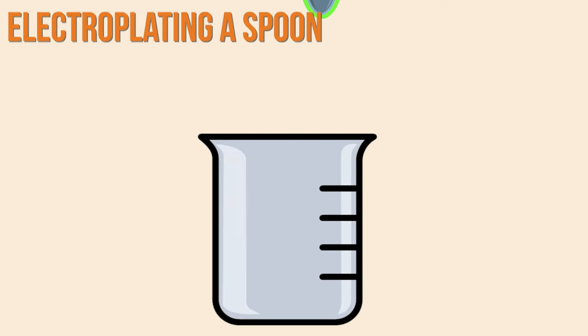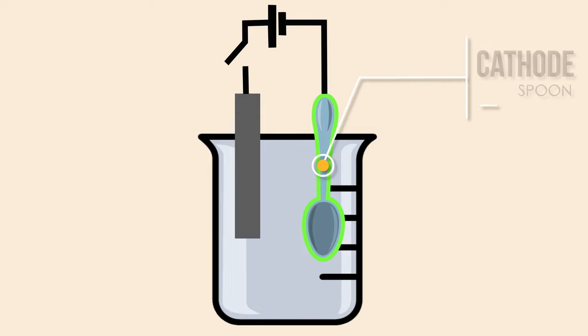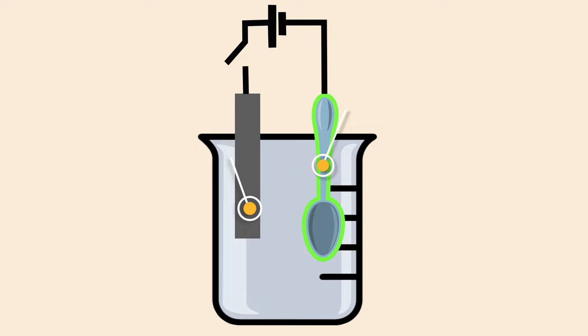The spoon, which is made up of inexpensive metal, is connected to the negative terminal of the voltage source and acts as the cathode. The anode, on the other hand, is a silver electrode. Both electrodes are immersed in silver nitrate solution.